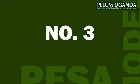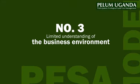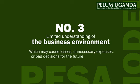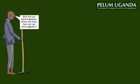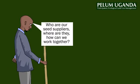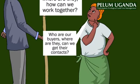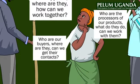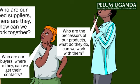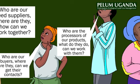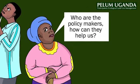Number three: limited understanding of the business environment, which may cause losses, unnecessary expenses or bad decisions for the future of the enterprise. For farmers to better understand the business environment, in module three, the PESA model introduces farmers to map and analyze selected value chains and enterprises. By doing so, it describes actors and stakeholders as well as their responsibilities.